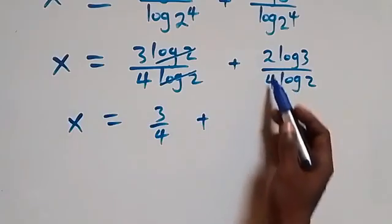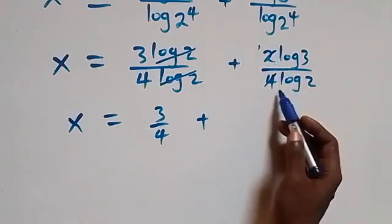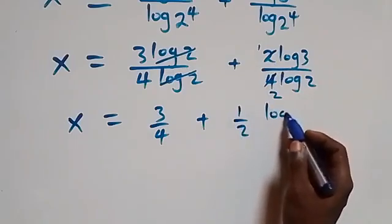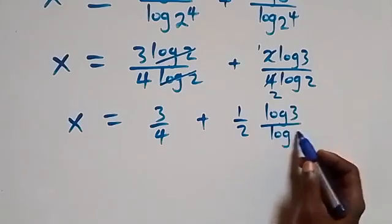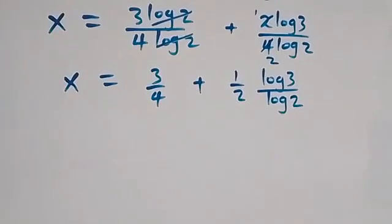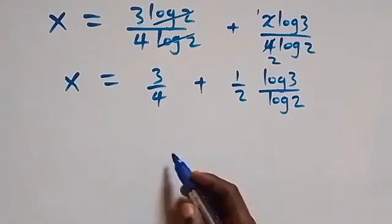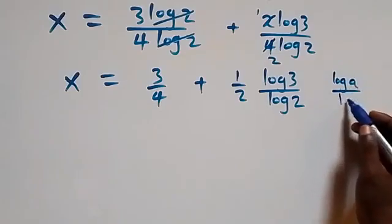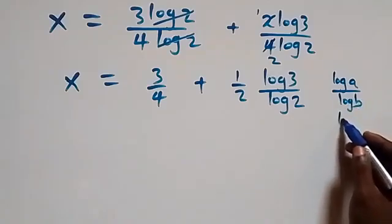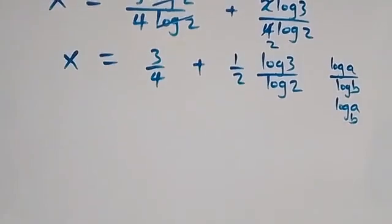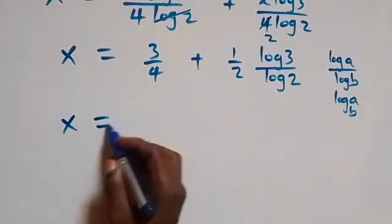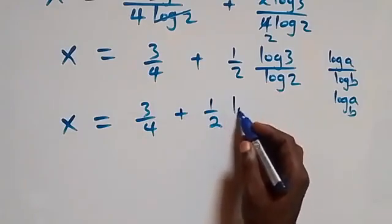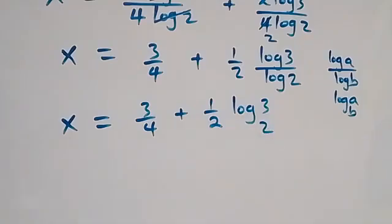... and for the second fraction, we reduce: 2 over 4 simplifies to 1/2, giving (1/2)·(log 3 / log 2). Applying the change of base formula — log a over log b equals log_b(a) — this becomes (1/2)·log₂3. So x equals 3/4 plus (1/2)·log₂3.